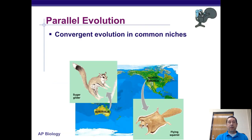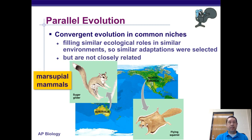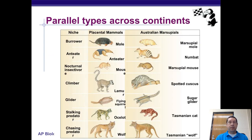Parallel evolution is convergent evolution in a common environment. Sugar gliders and flying squirrels are both able to glide from tree to tree. They live in very different parts of the world — sugar gliders in Australia, flying squirrels in North America. Again, similar adaptations to a similar environment, but they are not closely related: one is a marsupial and one is a placental mammal. So we see parallel types across continents.